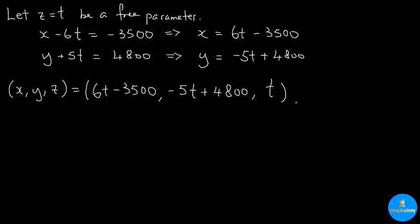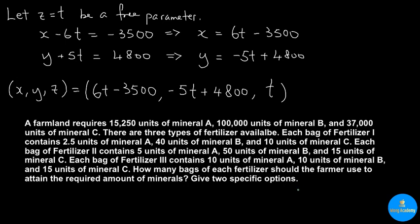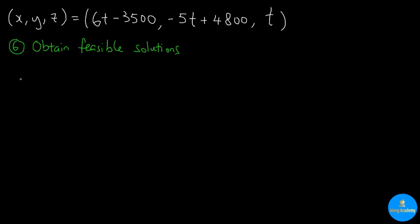At this stage, we are very close to done. However, if we still recall, in the original problem, we need to give two specific options to the farmer. So we still need to obtain feasible solutions. What does feasible solution mean? Mathematically, when we plug in t as an arbitrary value, this will solve our system of linear equations. However, if any of these three entries are negative or fractional, it won't make sense because they are representing the number of bags of fertilizers. Therefore, we need to make sure that these three are non-negative integers.